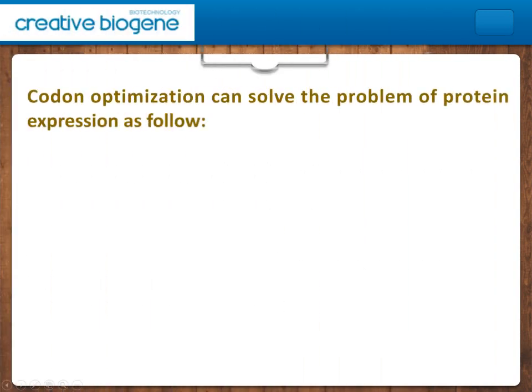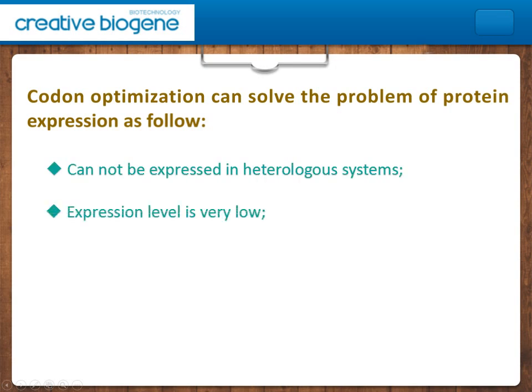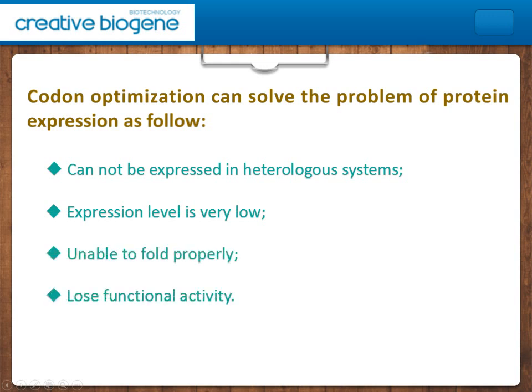Codon optimization can solve the following problems of protein expression: the gene cannot be expressed in heterologous systems, expression level is very low, the protein is unable to fold properly, or it loses functional activity.